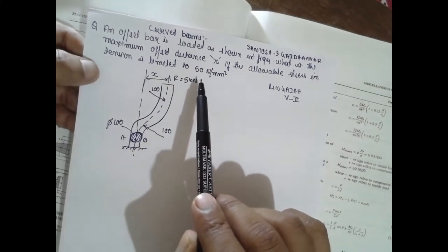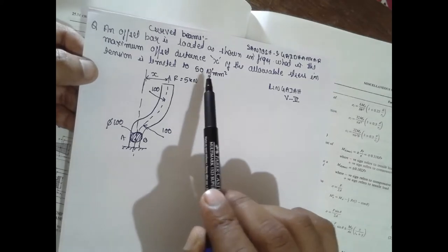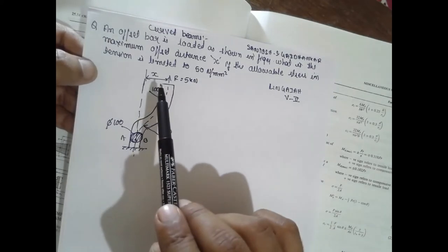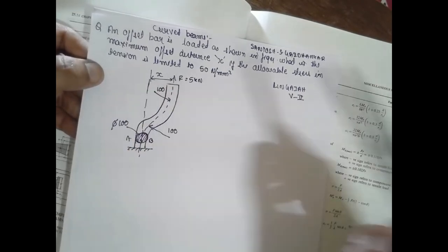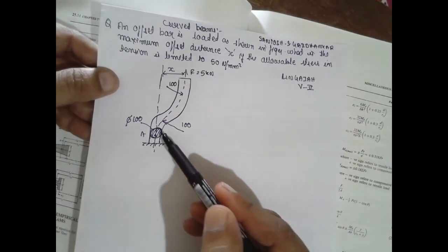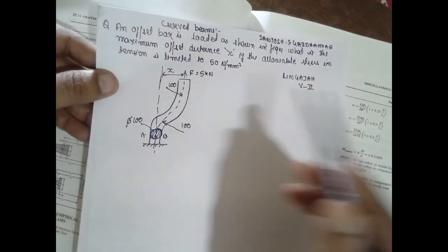We are given sigma ri directly. We have to find out the x. The profile is given here. This is the offset. The profile is given.